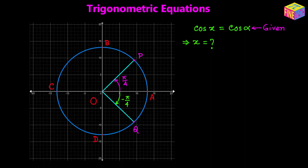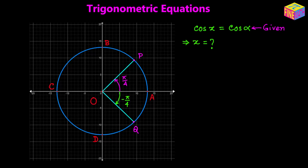In this video we are going to discuss how to solve the trigonometric equation of the form cosine of x equals cosine of alpha, where alpha is a given angle. Essentially we have to find the possible values of x for this trigonometric equation.